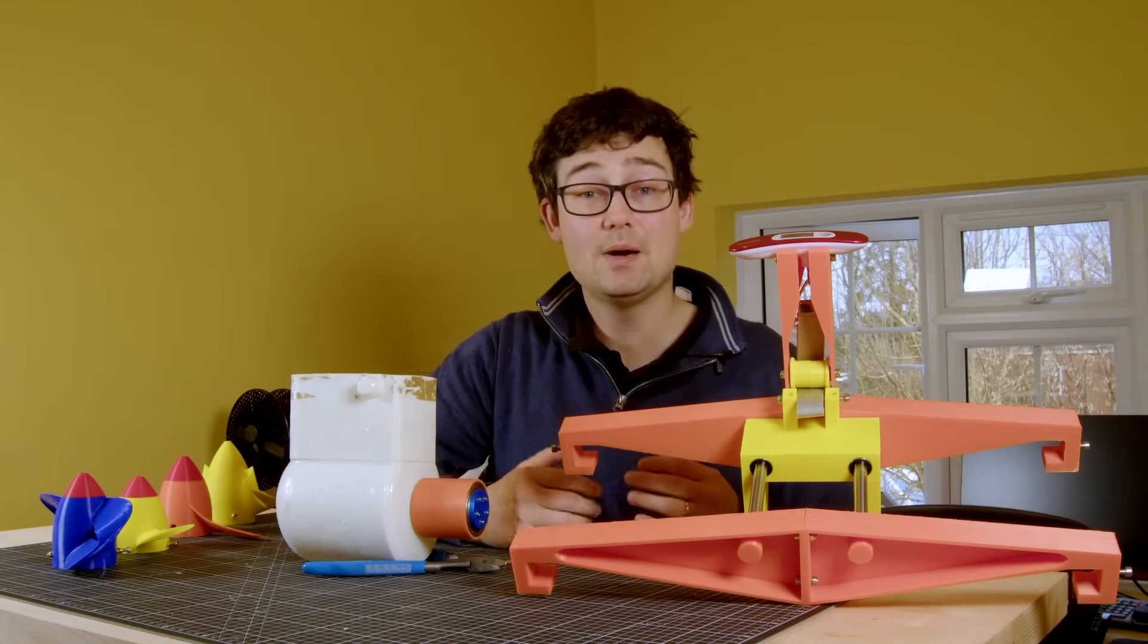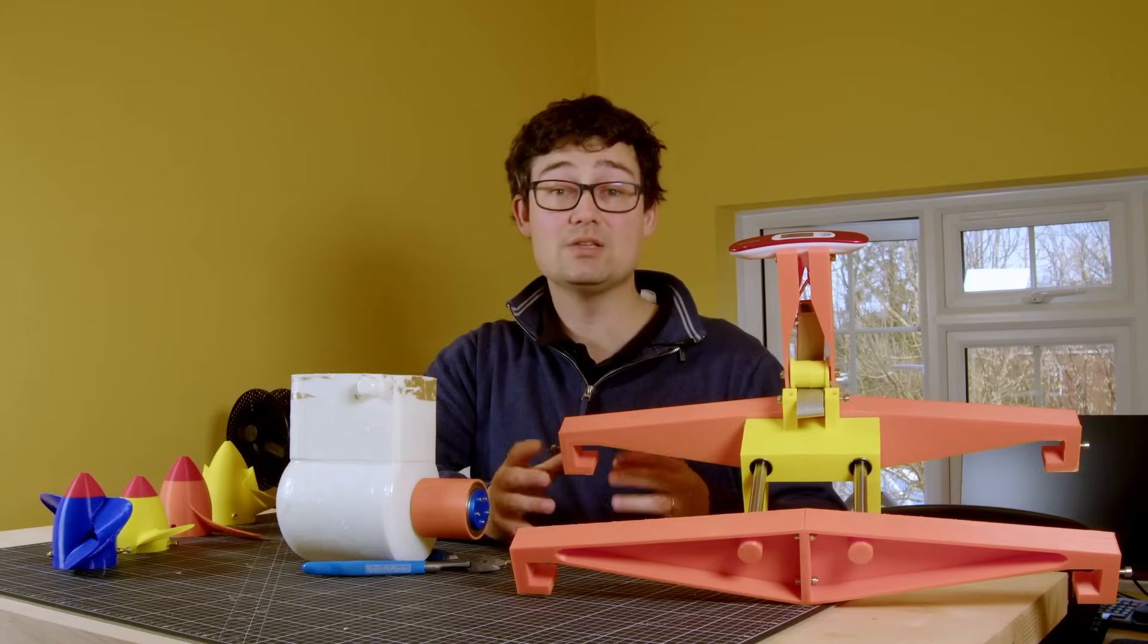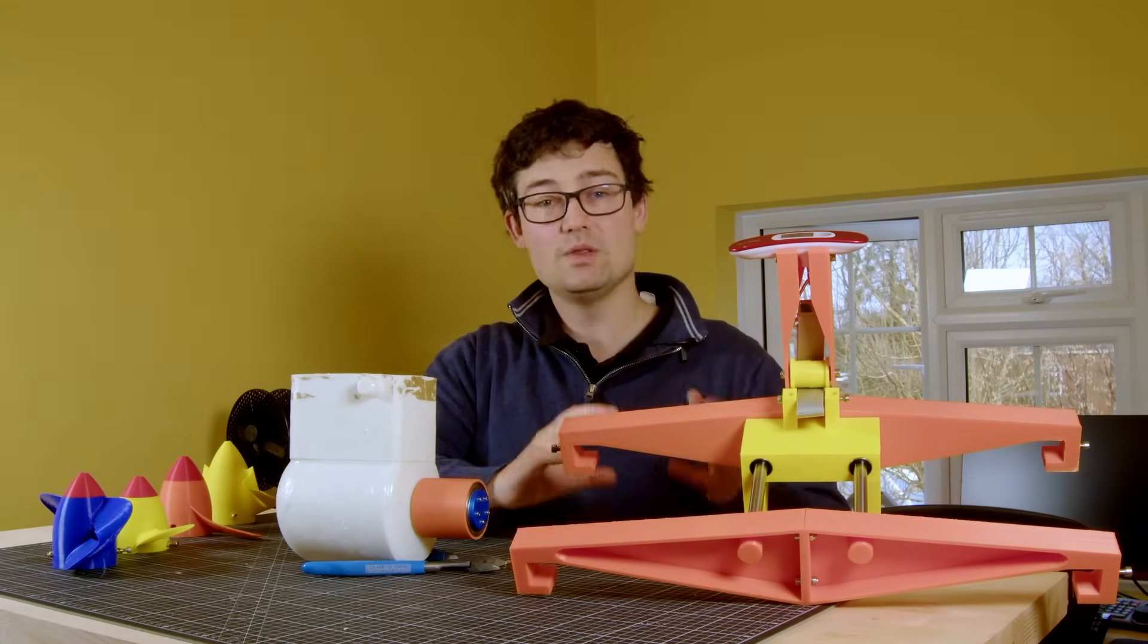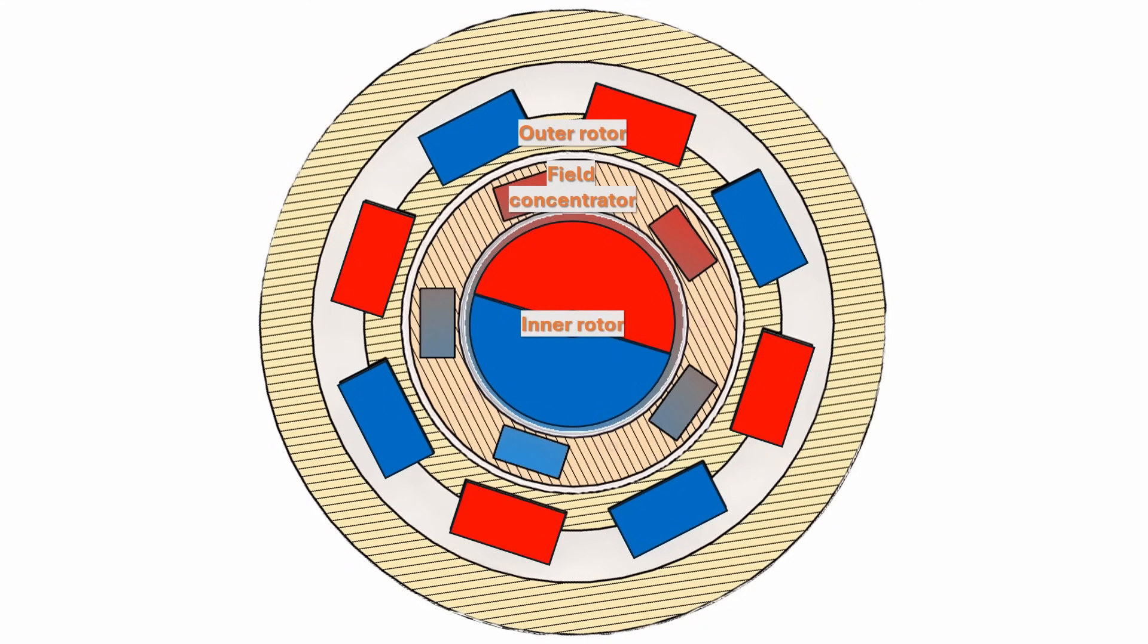I'm going to try and be clever and combine a non-contact drive system that incorporates a reduction gearbox, known as a magnetic gear, to better match the motor with the propeller. A magnetic gear is made up of three components: an inner rotor, field concentrator and outer rotor.